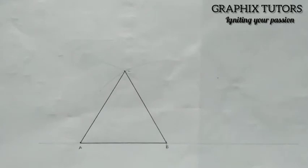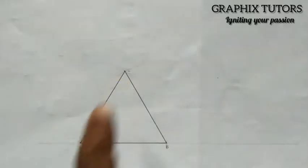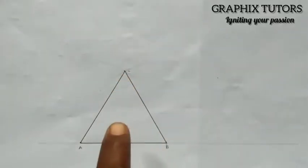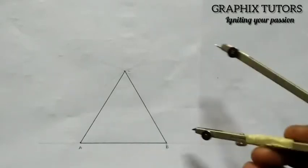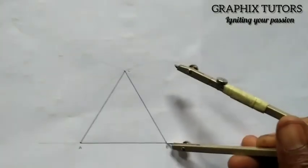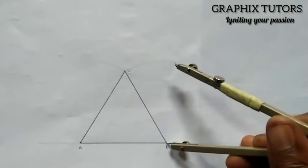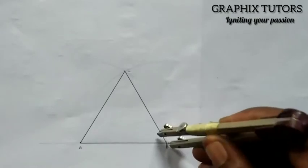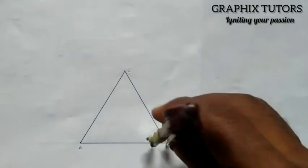Now this is what I'm having. What I'll do here is this: I'm going to bisect each of these angles — angle A, angle C, and angle B — to get the point where every one of them meets. I'll take my compass and place it at each point, drawing an arc with the same radius.